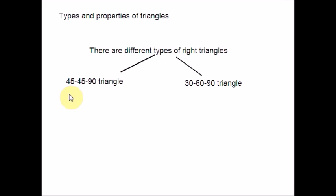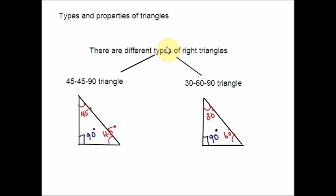The 45-45-90 triangle is a right triangle because one angle is 90°, and the other two angles are 45° each. This is also an isosceles right triangle because the two equal angles mean the two opposite legs are of equal length. So it is also called an isosceles right triangle.